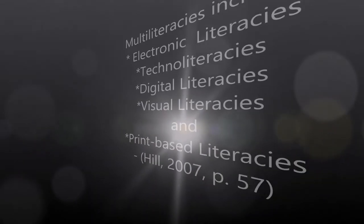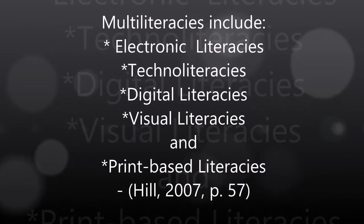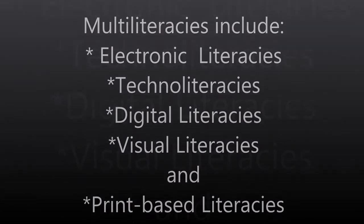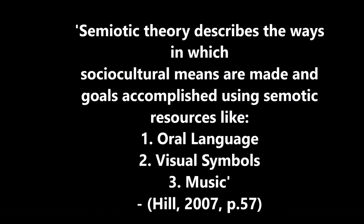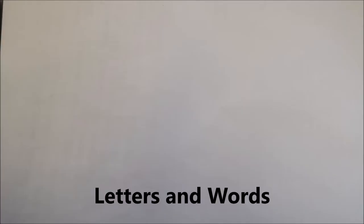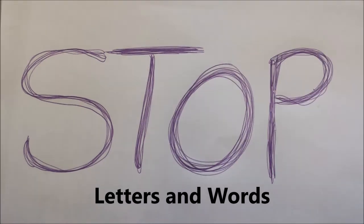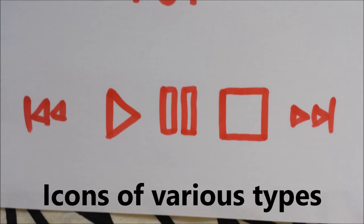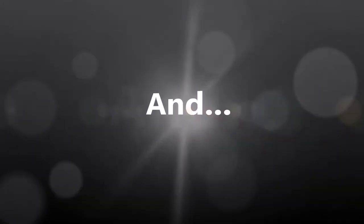To understand multi-literacy, first we need to understand semiotic theory. The semiotic theory and study of signs and symbols displays how they communicate meaning by using letters and words, drawings, icons of various types, colors, photography, and animation and movement.